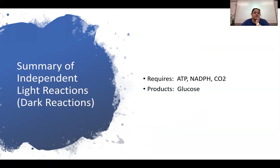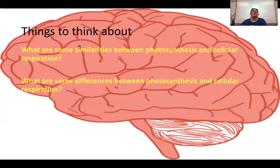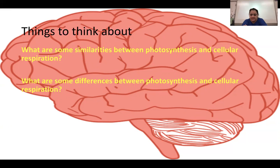That finishes the notes. Next we'll be looking at a leaf's structure and how all this works. We also want to compare photosynthesis with cellular respiration: think about what the similarities are and what the differences are — there are a lot of answers for both questions.